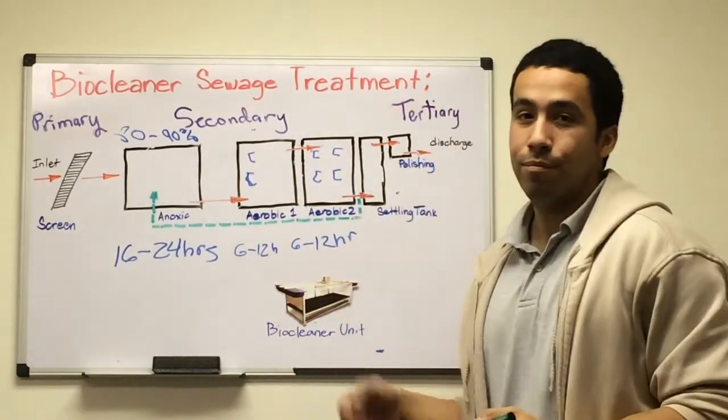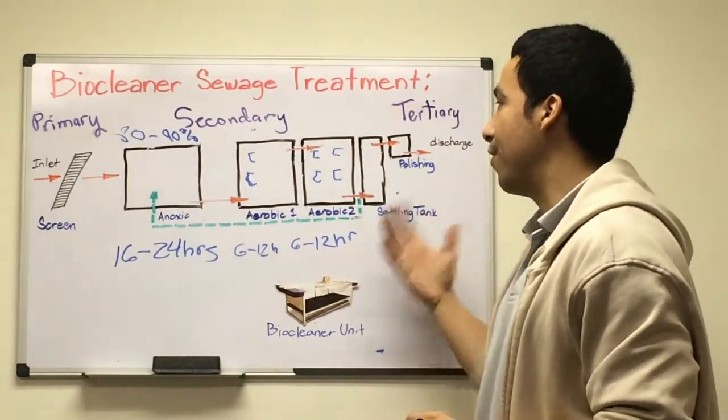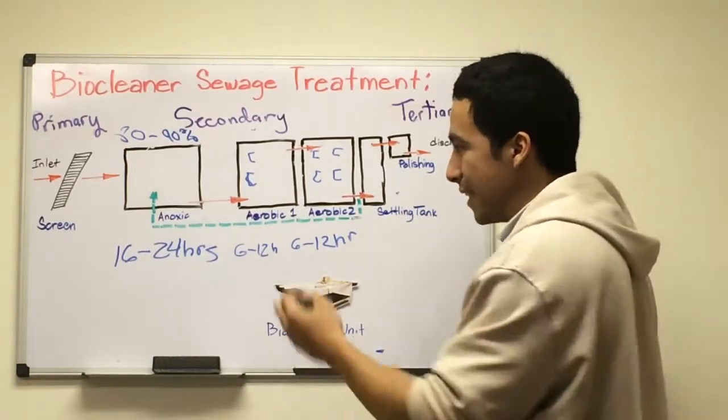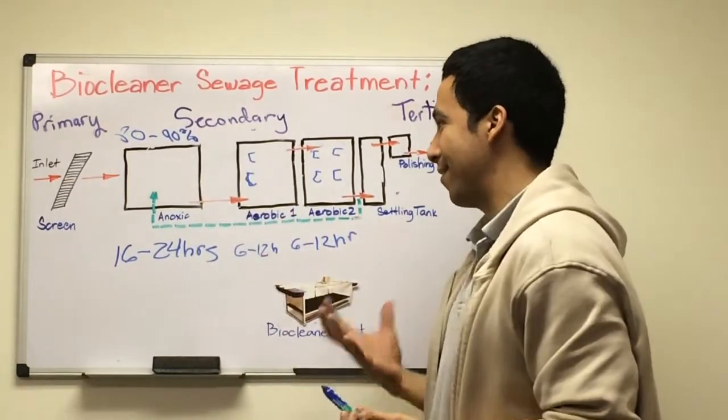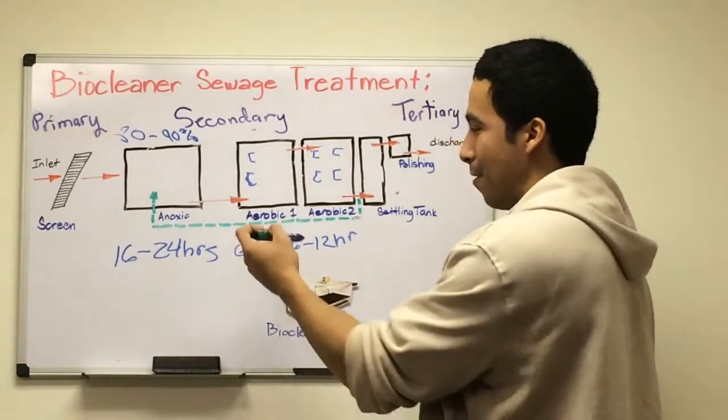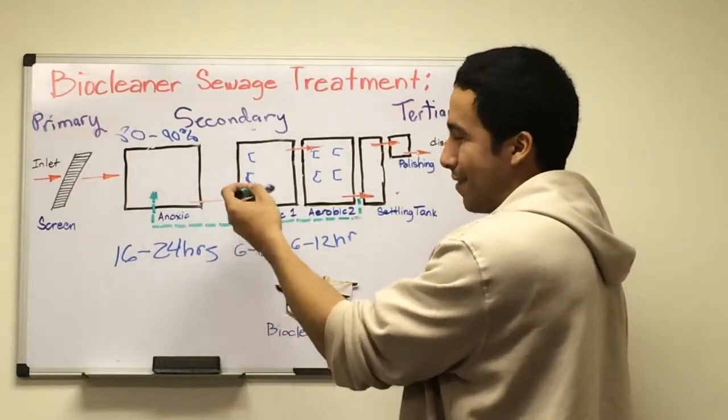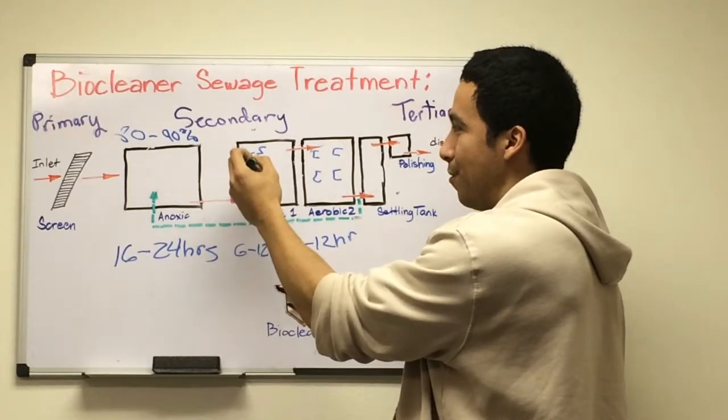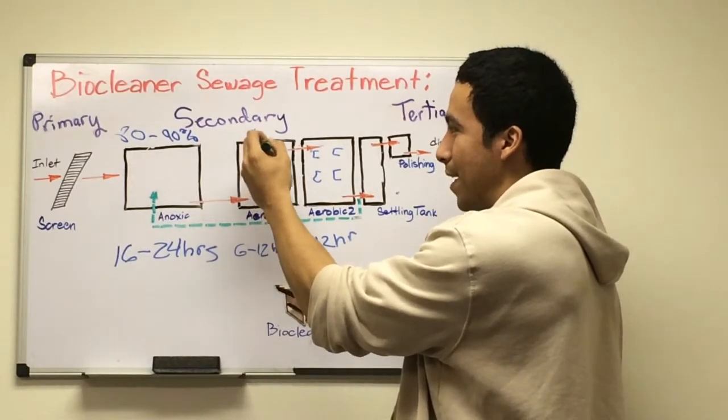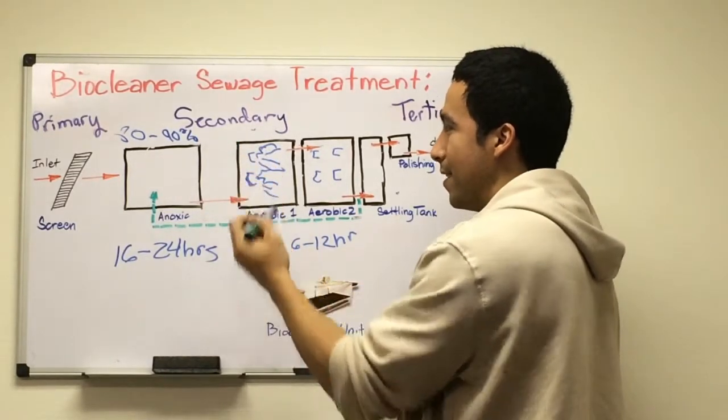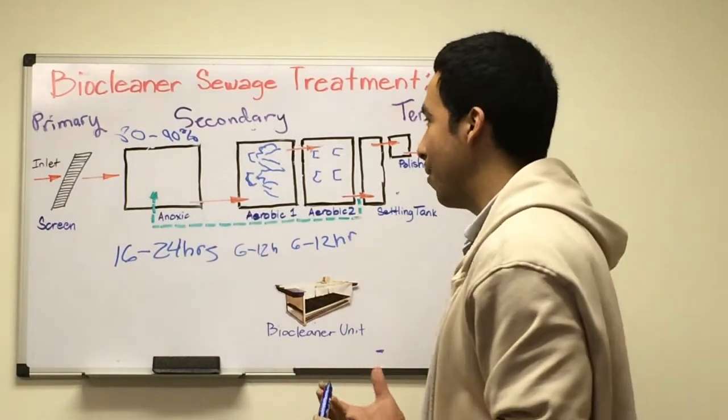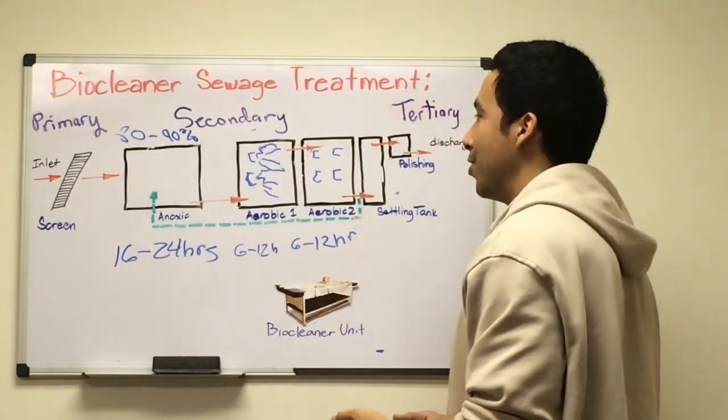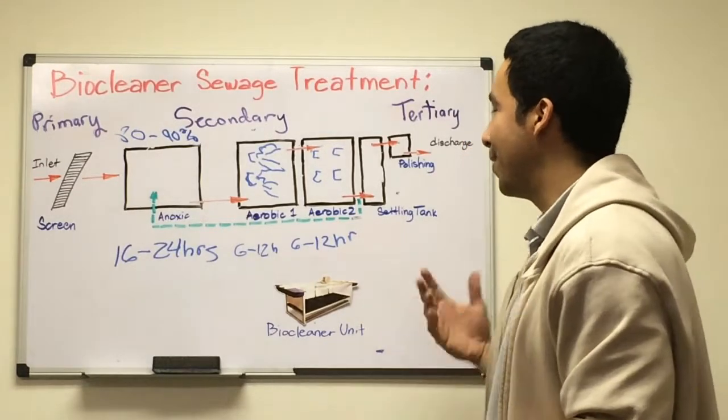Our bioreactor unit provides mixing and aeration to disperse our microbes all over the tank. Since we use an established colony of microbes, they just keep multiplying and replicating, so you never have to add any microbes after that.